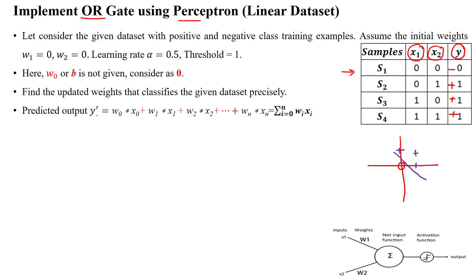We find the activation function with respect to this given data set. The activation function is the linear sum with respect to a threshold value. The threshold value is given as 1 and the learning rate is 0.5. Initially the weights w1 and w2 are both taken as 0. We draw the perceptron: two inputs x1 and x2 with weight factors w1 and w2, and a linear sum block for the linearly separable data.